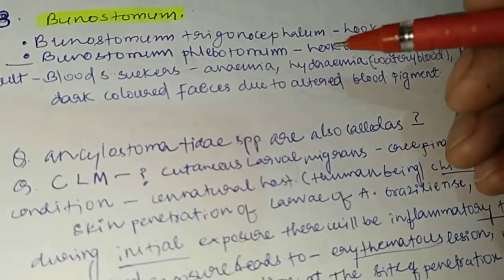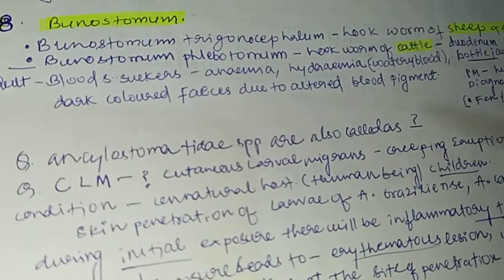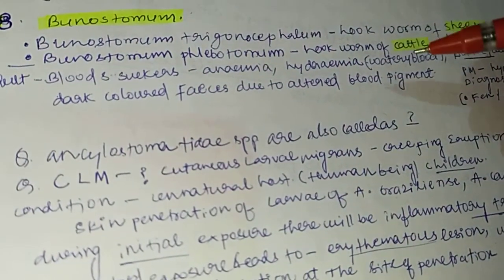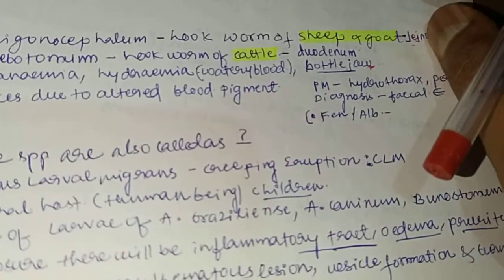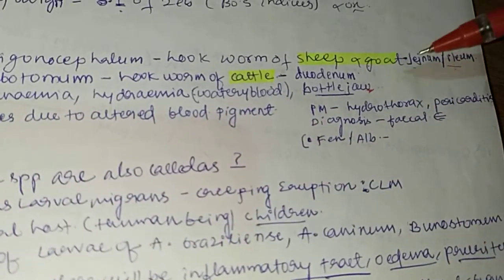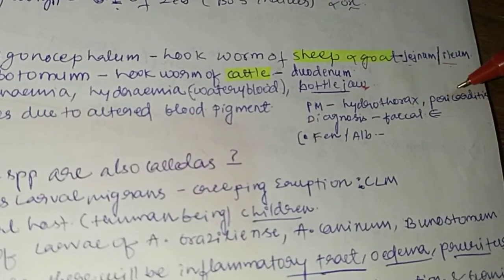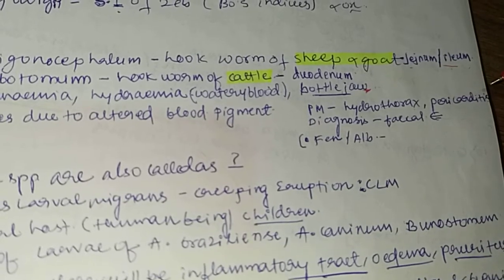Clinical signs include dark colored feces, which is due to the altered blood pigment. Post-mortem lesions such as hydrothorax and pericarditis can also be seen.